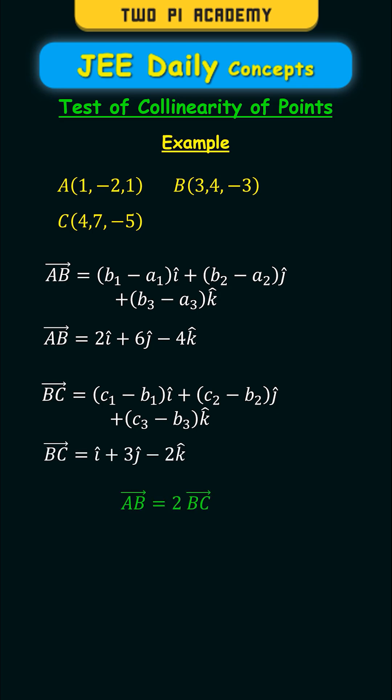And from these two vectors, you can notice that vector AB is two times vector BC, so therefore, the given points are collinear to each other.